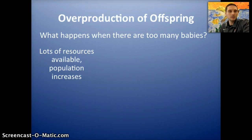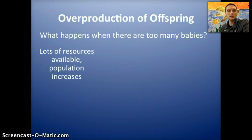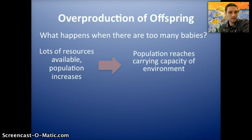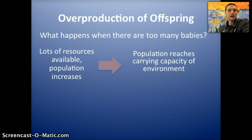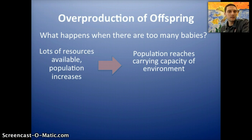This is all made possible when there are lots of resources available — and resources doesn't just have to mean food. It could also include space, mates, or other nutrients that are needed by the organism to survive, such as sunlight for plants. What we see happen is that the population is going to increase because there are lots of resources available, and eventually that population is going to reach its carrying capacity — the maximum number of individuals that can survive in that environment given the resources available.